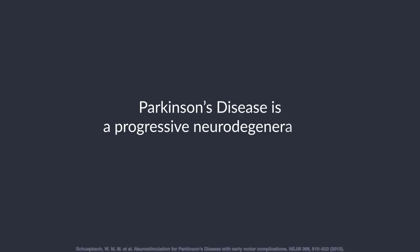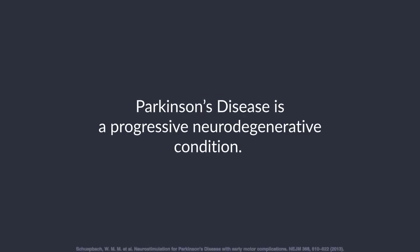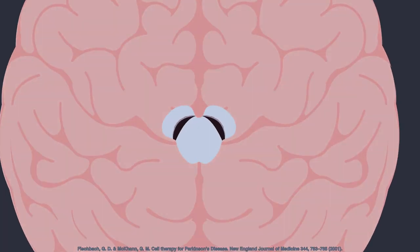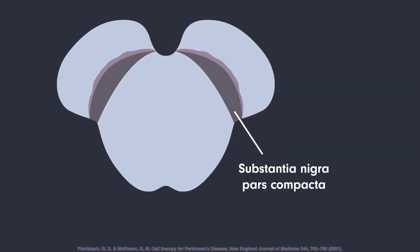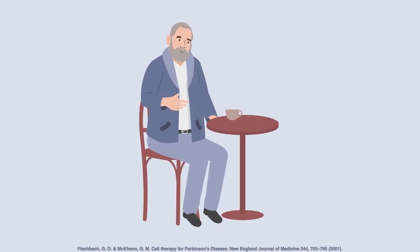Parkinson's disease is a progressive neurodegenerative condition. Loss of pigmented midbrain neurons in the substantia nigra pars compacta leads to many motor symptoms of Parkinson's, such as rigidity and bradykinesia.